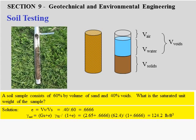Section nine is our geotechnical and environmental engineering section. We're actually going to do a soil test to find things like permeability, cohesion, friction angle, classification of soils, and more.